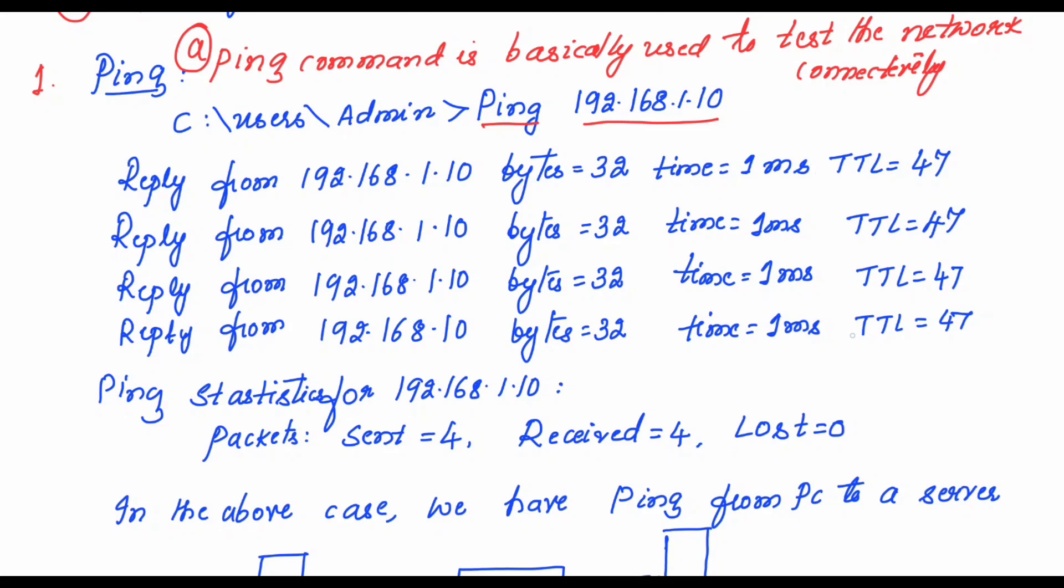You will be getting a reply of this sort. That means these are the four packets that are received. The sender has pinged to the destination host 192.168.1.10 and it has received the reply from the destination. Four packets are received. Always it will be like this - the ping statistics for this destination host: packets sent are four, received four, lost is zero, zero percent loss.